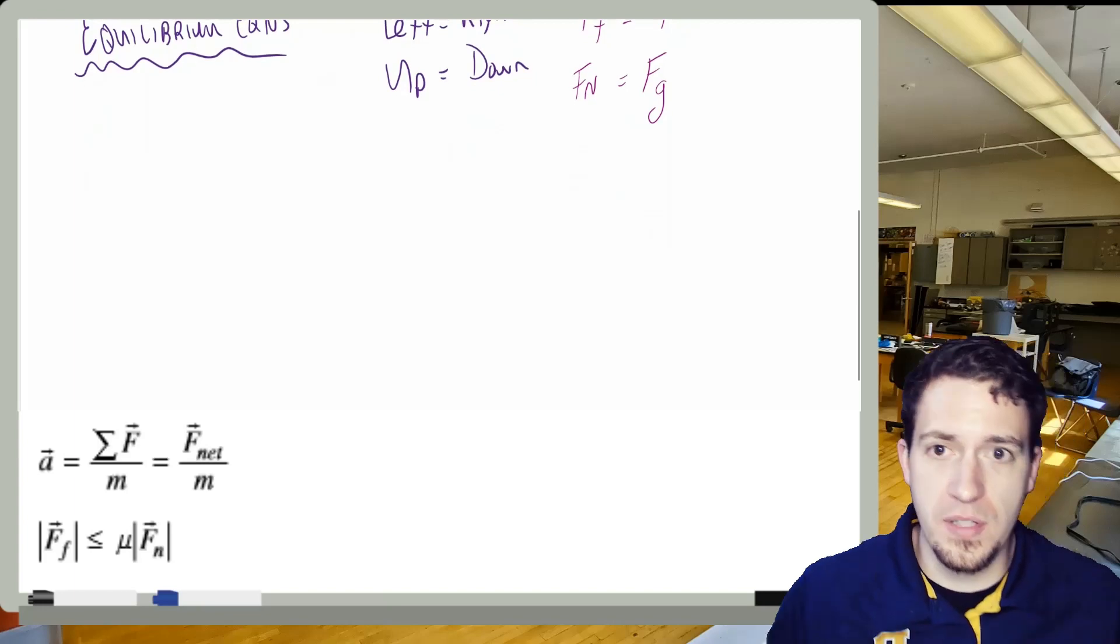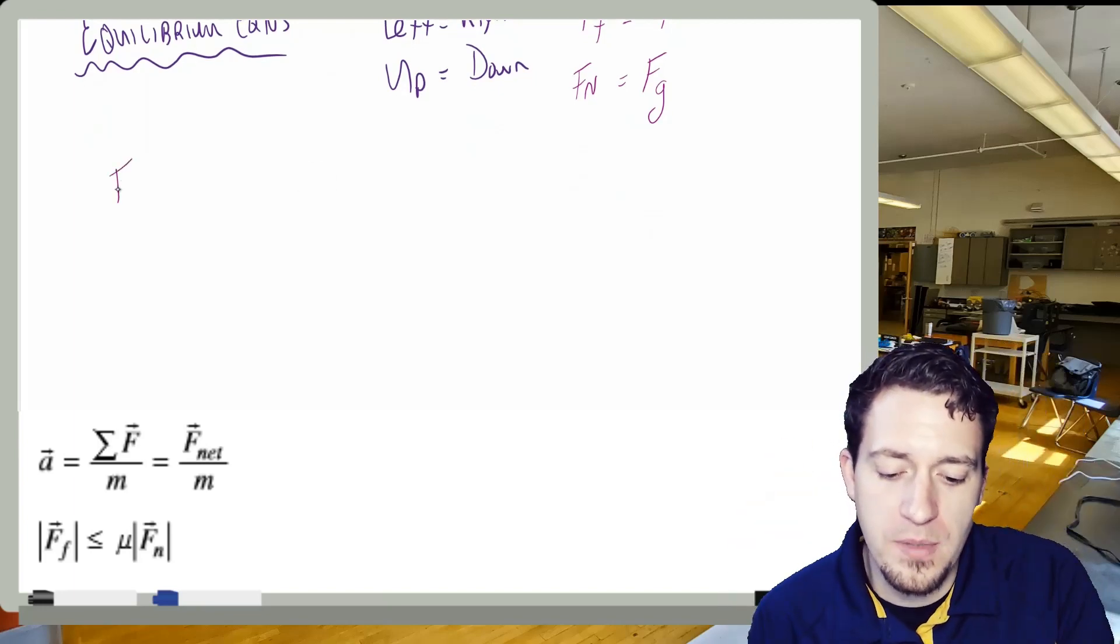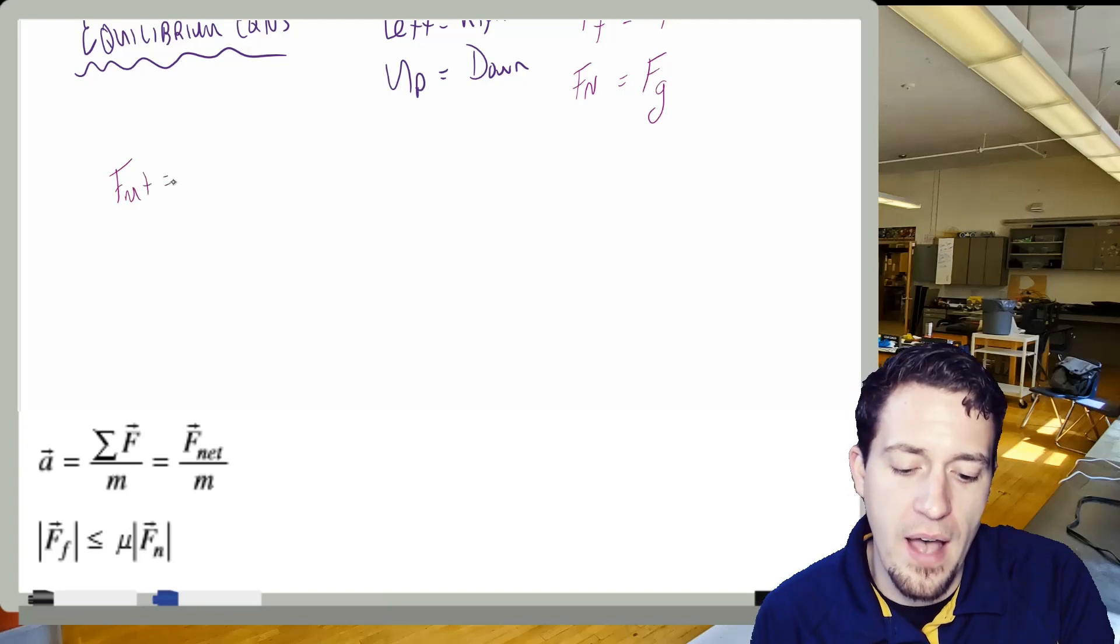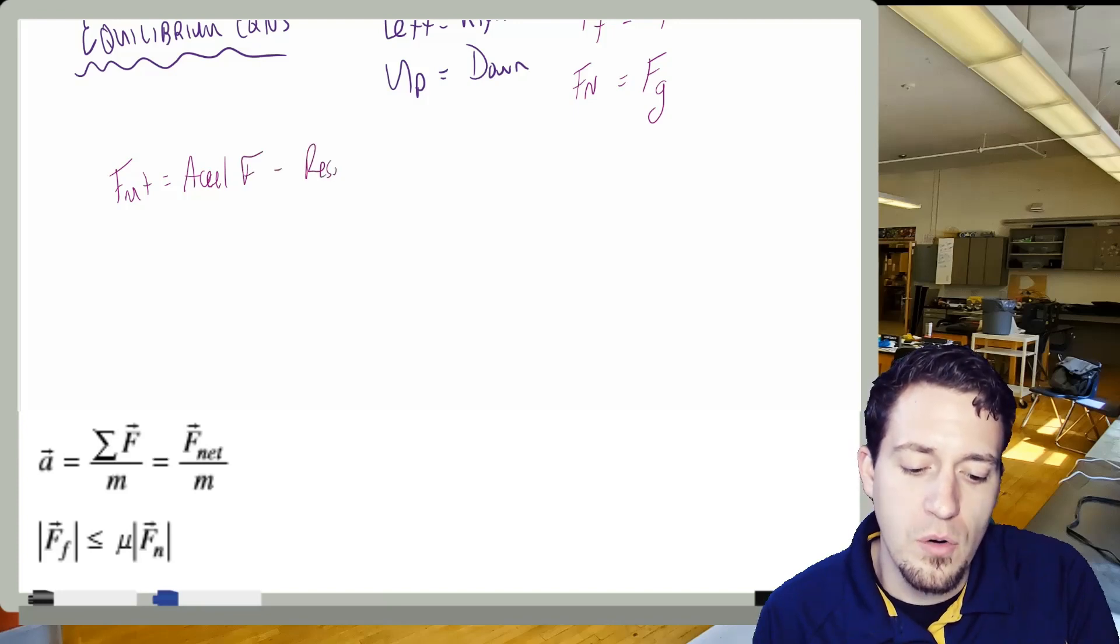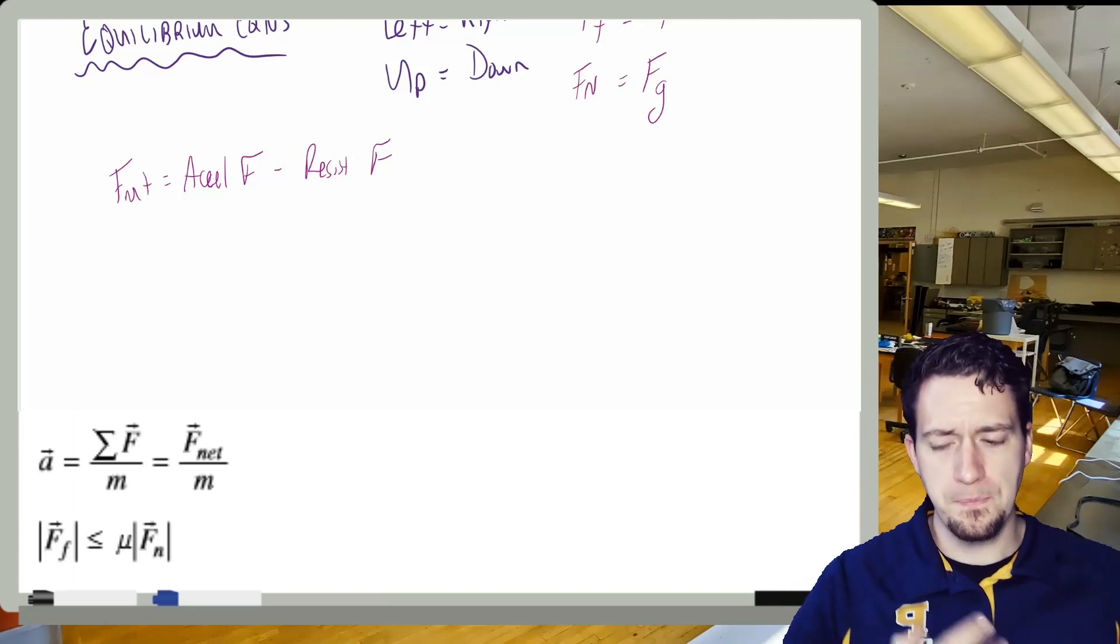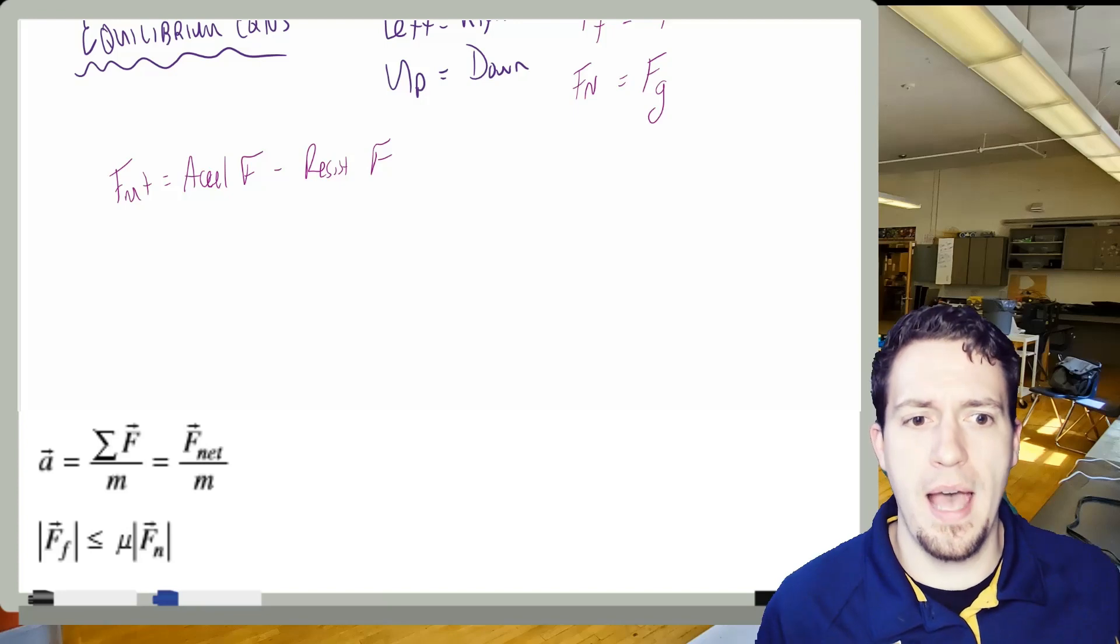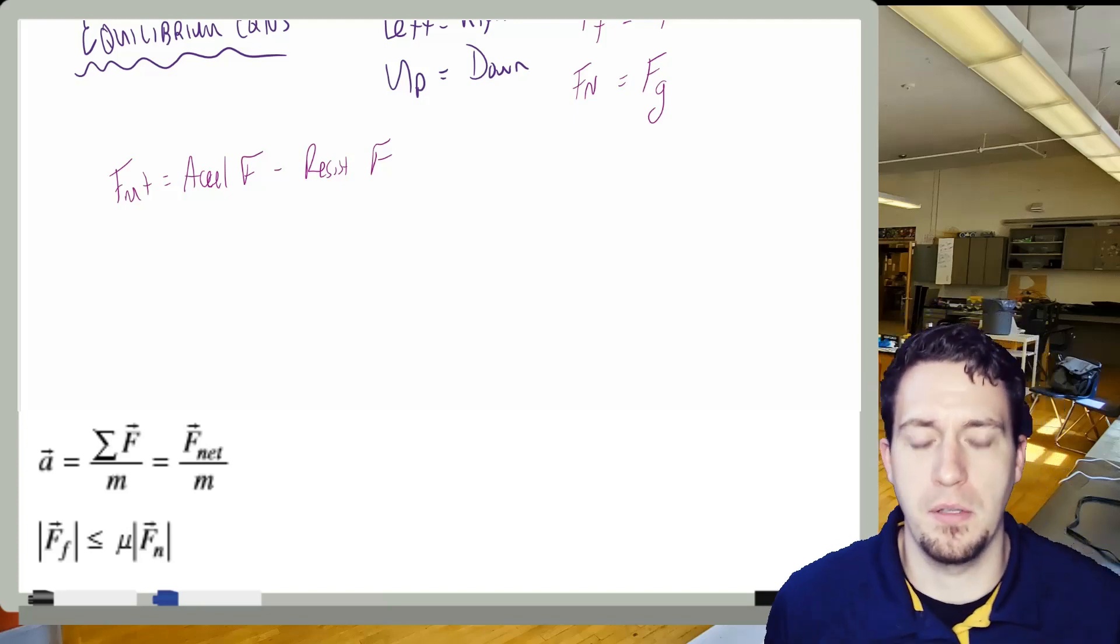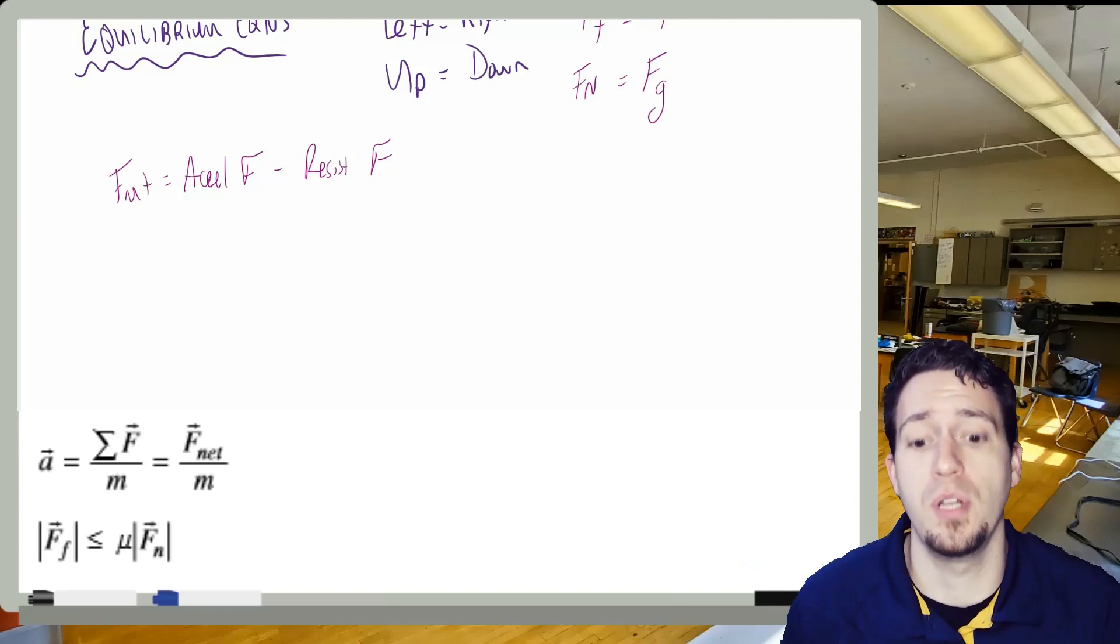So let's keep rolling with this. The next thing we had done was accelerated motion. And the trick we did for this is we set all our problems up like this. We said F_net. And we had said it is going to be accelerating forces minus resistive forces, right? And what this helped us to do was try to understand different scenarios and try to have an easy, systematic way to calculate them. So let's go back to that original example. Let's imagine there's not enough friction to hold it in equilibrium.